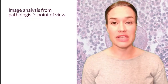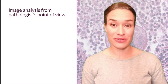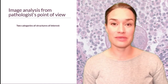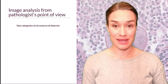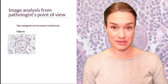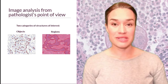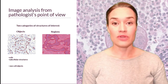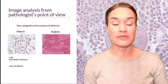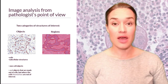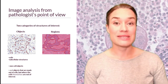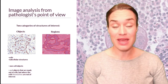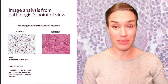Let us start with explaining how image analysis looks from the pathologist's point of view. For a pathologist, there are two main categories of structures of interest: objects or regions. Objects can be cells, subcellular structures, non-cellular structures — for example, beta-amyloid plaques — and objects made out of cells but where the cells are not of interest, for example, kidney glomeruli. It's built of cells, but we don't care about the cell; we care about the glomerulus.